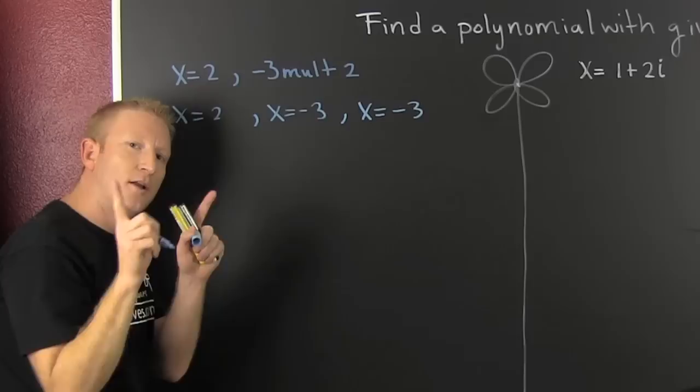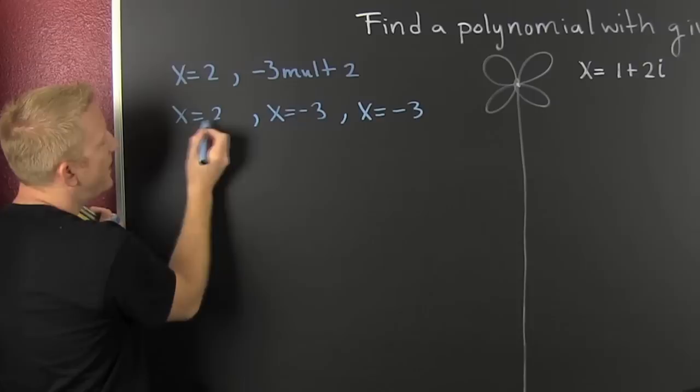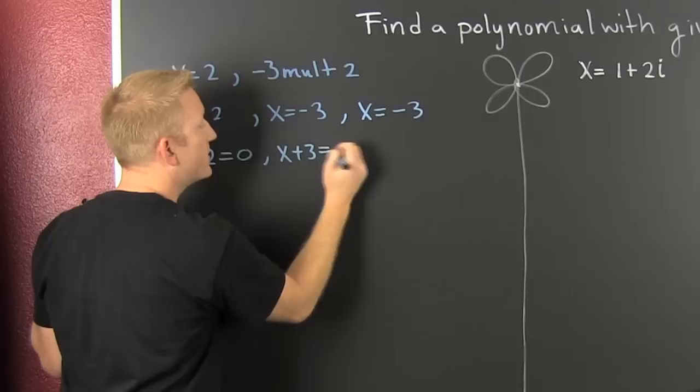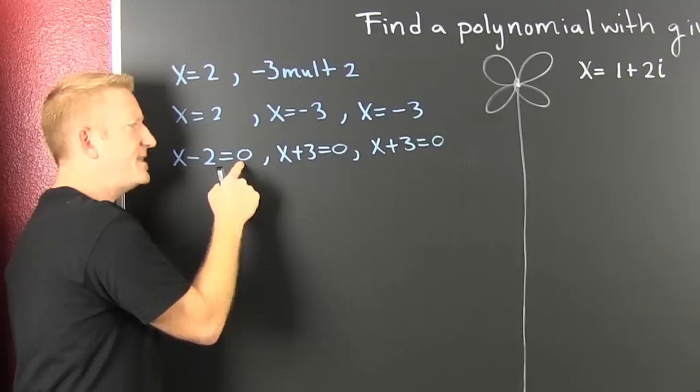So then, also, x is equal to minus three. It happens twice. Now look what's happening here. If I subtract this two off each side, then I have x minus two is equal to zero. And then, if I add three to both sides, I have x plus three is equal to zero.